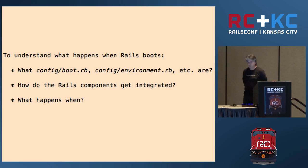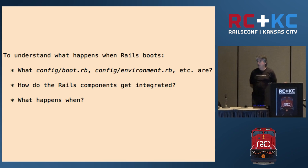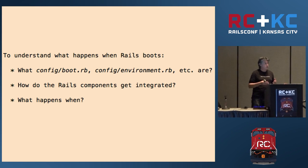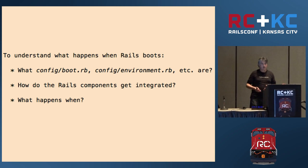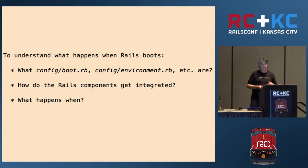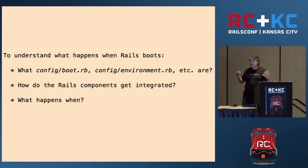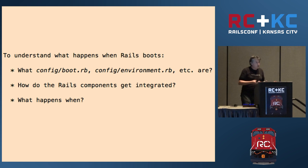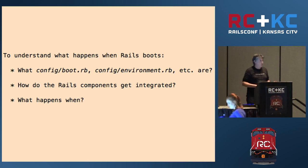Rails components in general can work independently of Rails. ActiveSupport, for instance, is a library you can use in a Ruby script that is not running inside a Rails application. You can also use ActiveRecord outside Rails — a regular Ruby script connecting to the database. But somehow, when you launch a Rails application, all these independent components are organized for you seamlessly, and there's nothing the programmer has to do to get these things working together. We are going to see how that works.